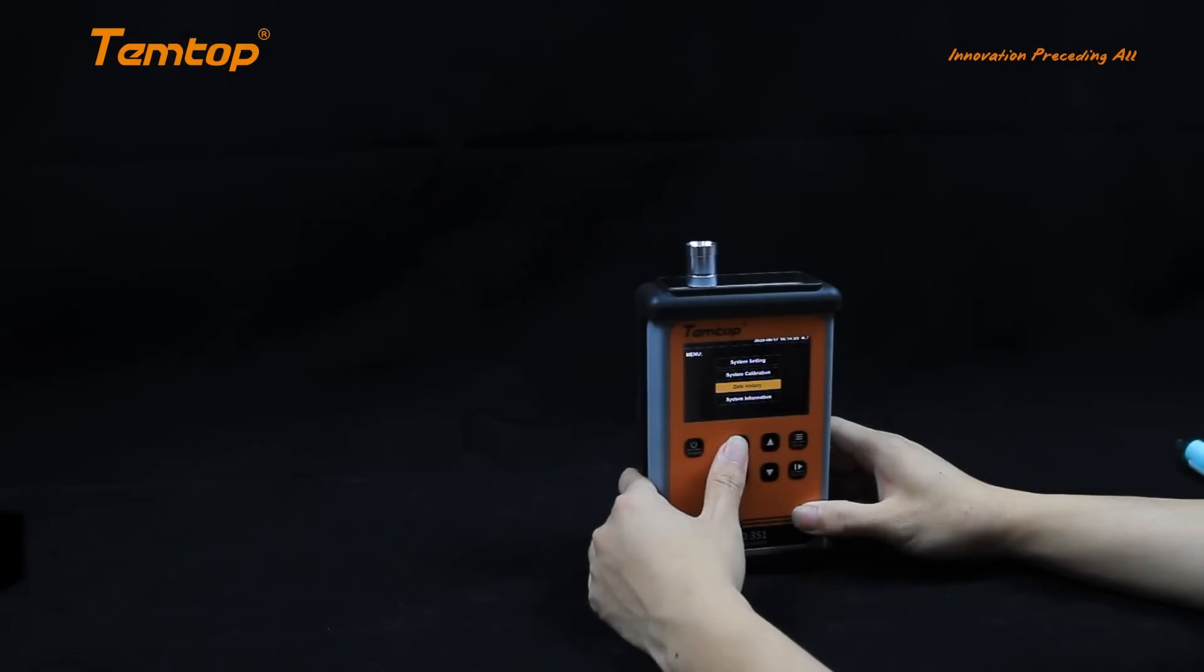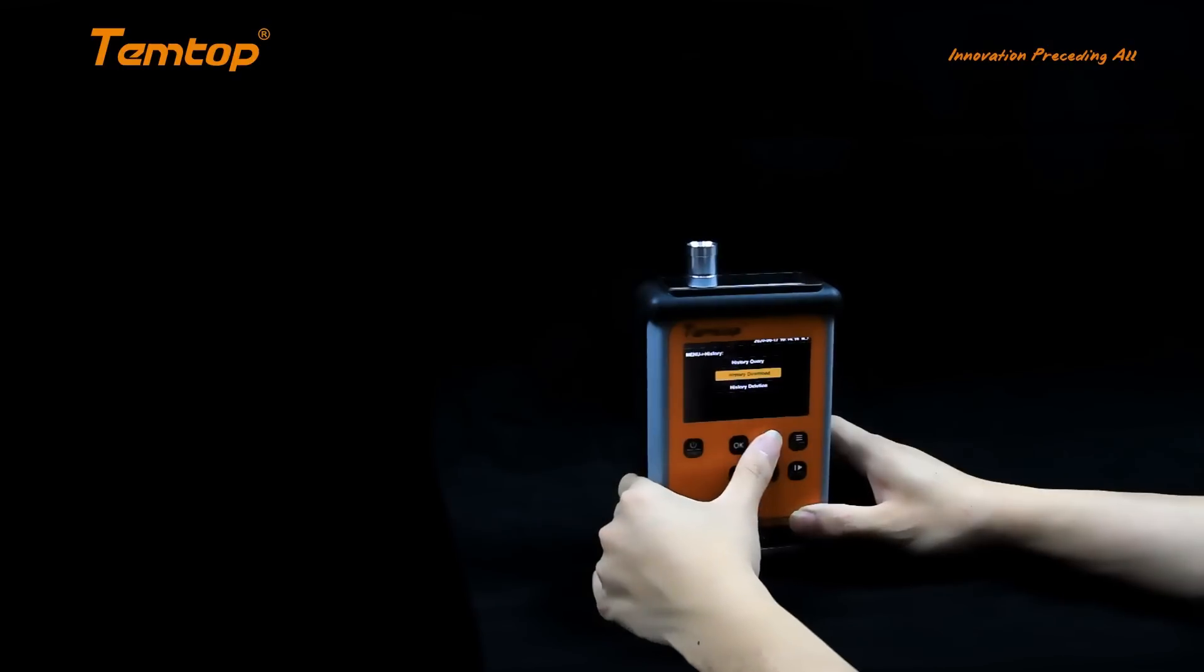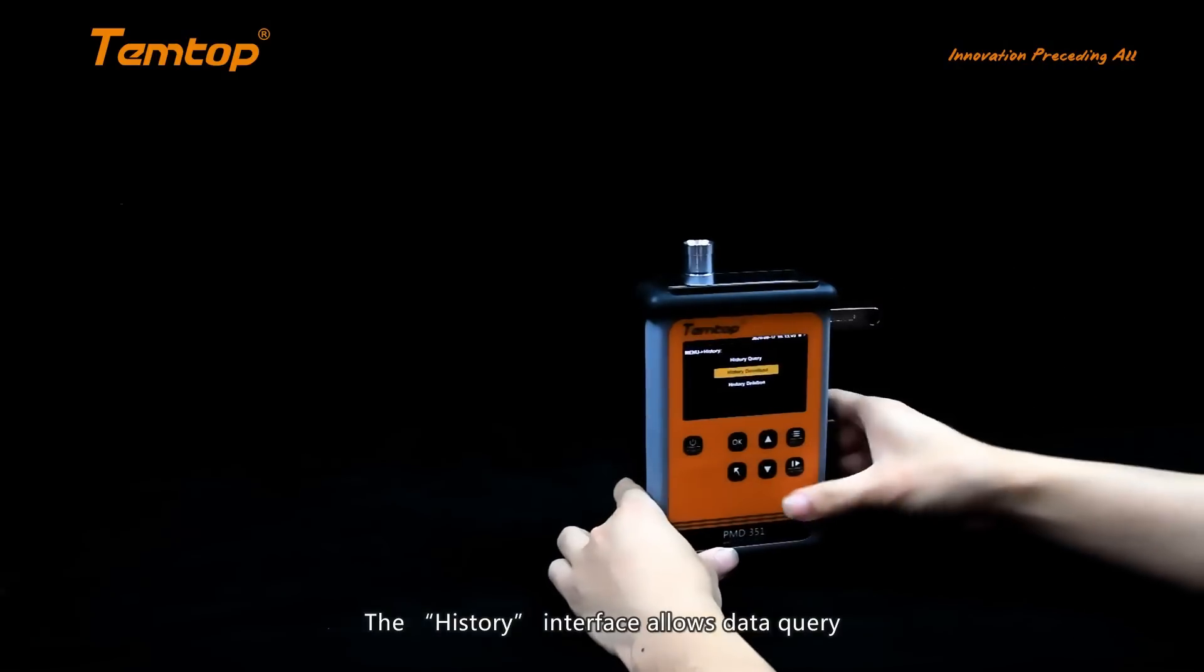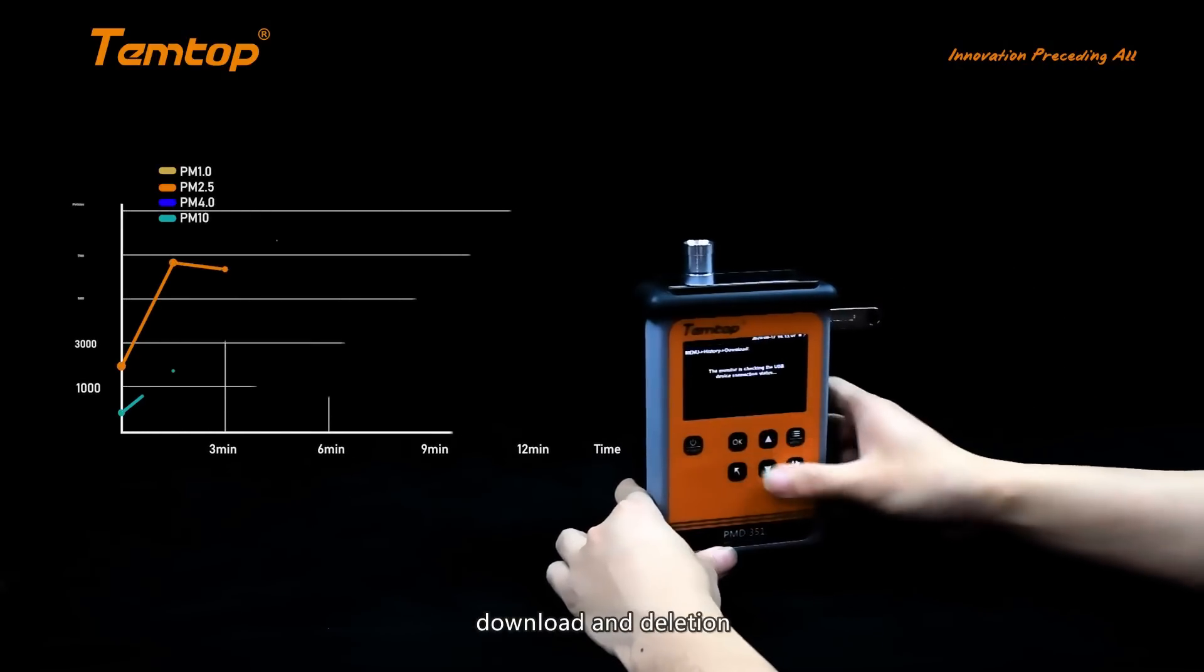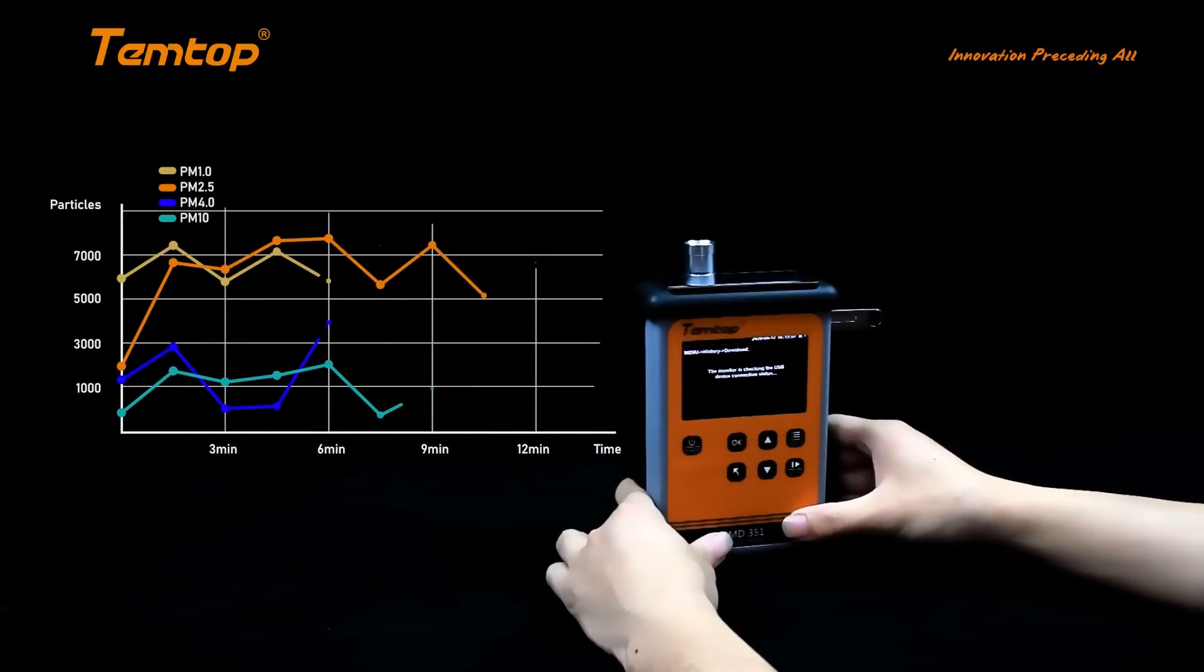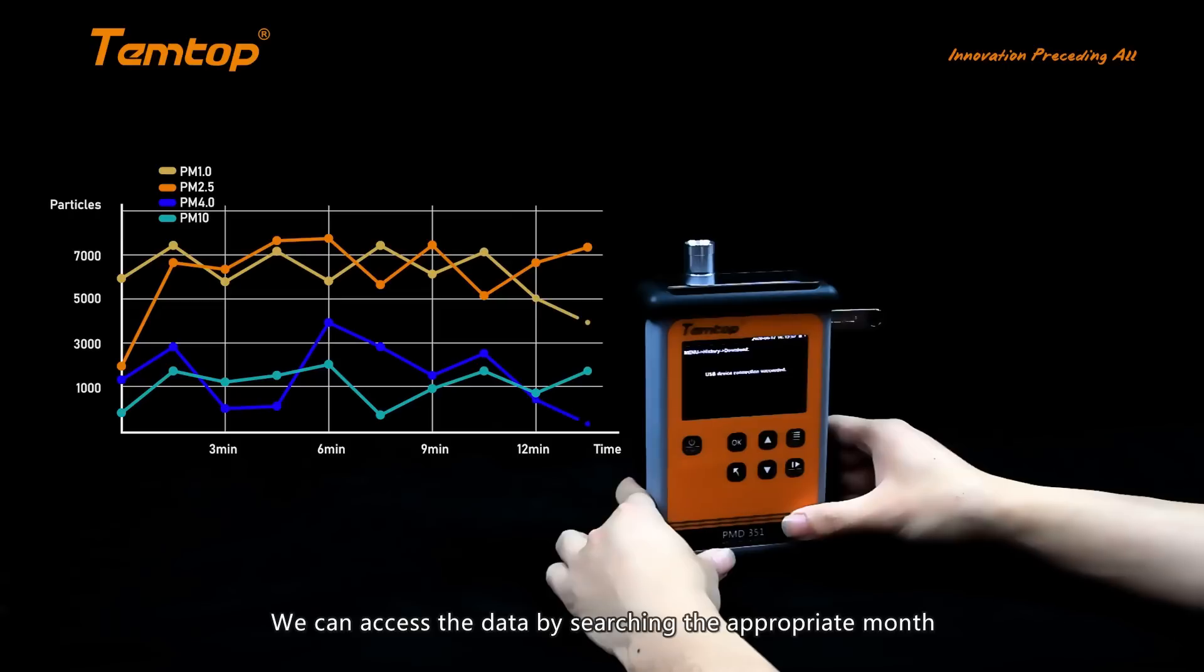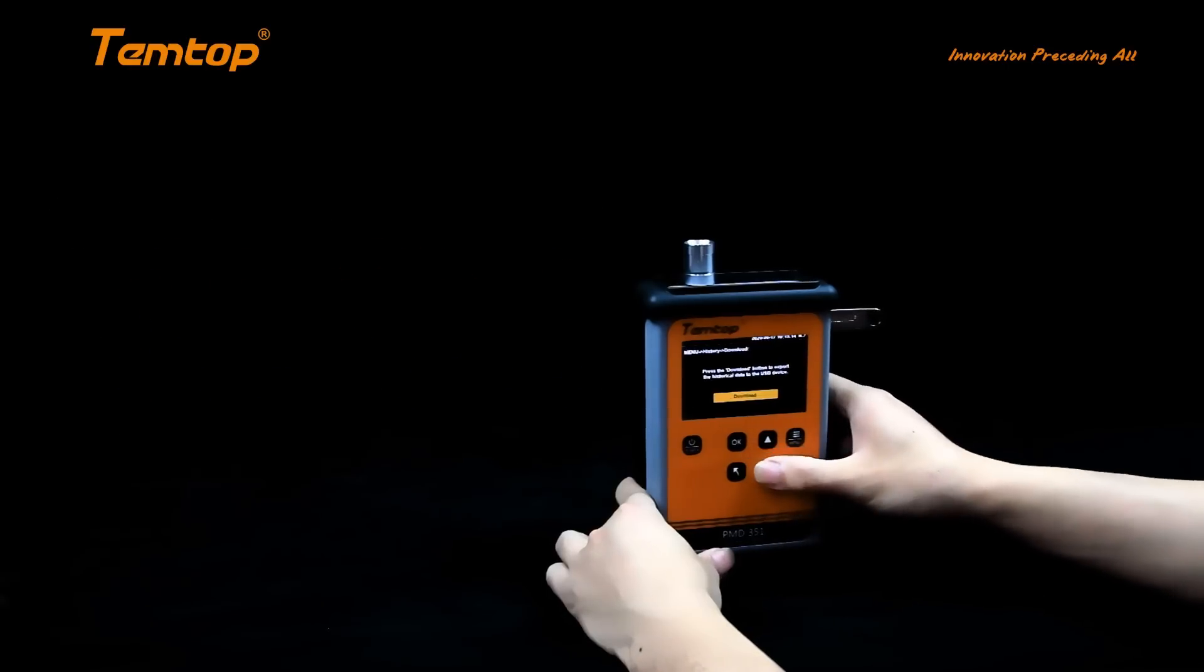The History interface allows data query, download and deletion. If you want to download the data, connect the flash drive and the device will check if the connection is ready. Then click Download to export the historical data to the flash drive.